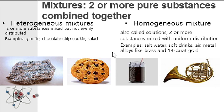When we say mixtures, there are two or more substances that are combined, but they are not combined chemically — they are physically combined. They can be separated by physical means. For example, if you have rocks and sand together, that is a mixture, but you can still separate the rocks from the sand. We have two types of mixtures: heterogeneous and homogeneous.